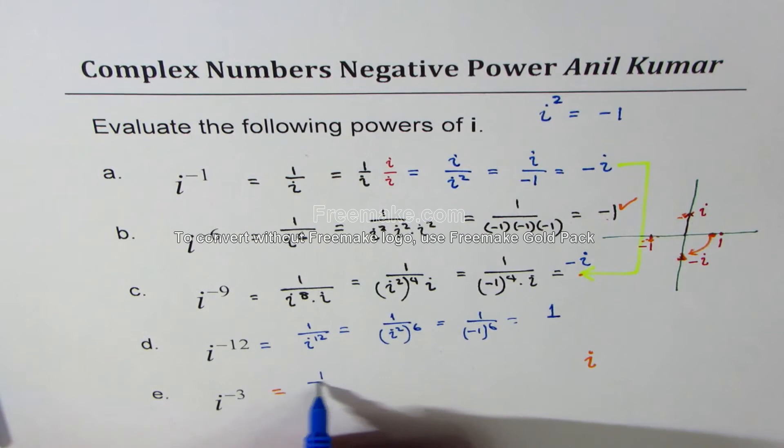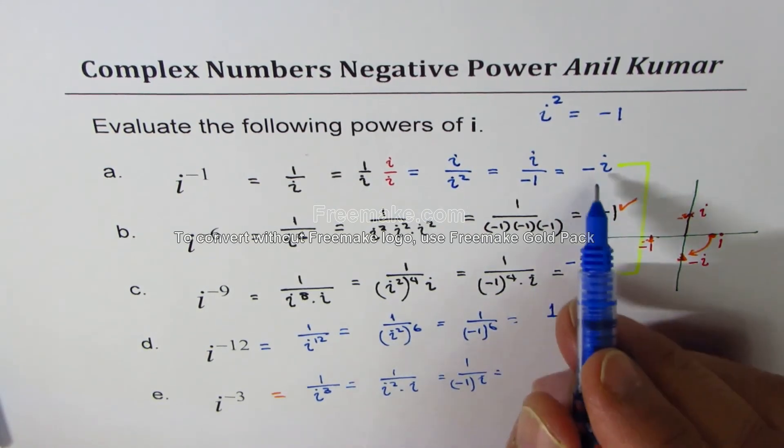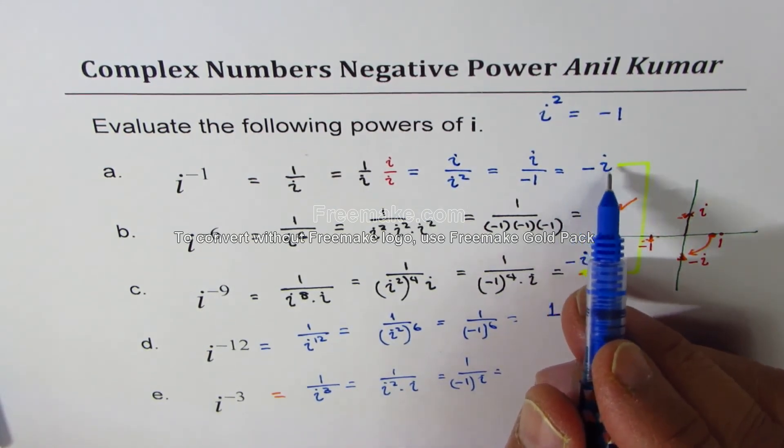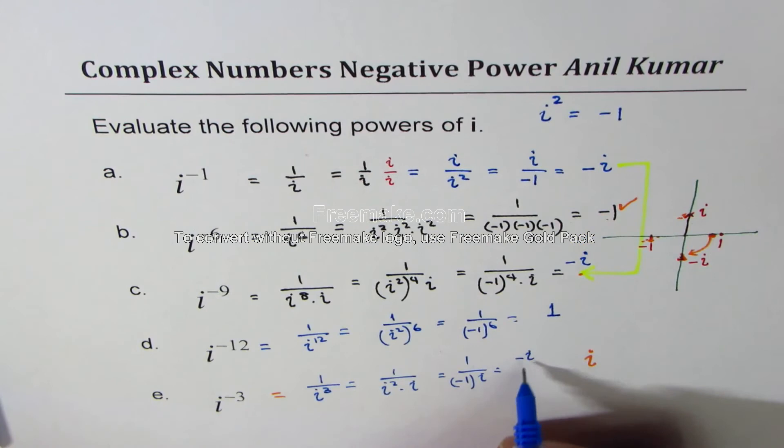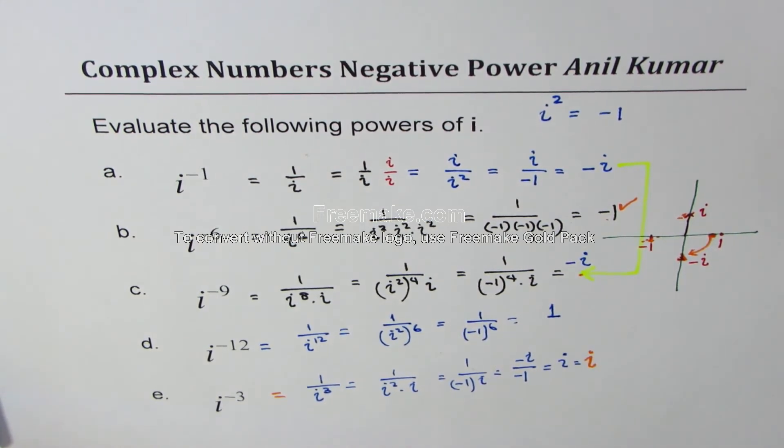i to the power of minus 3 is 1 over i cubed, which we could write as i square times i. Now i square is minus 1 and then we have 1 over i. 1 over i is minus i. So we get minus i over minus 1 and this is indeed equal to just i. So it is same as what we predicted.